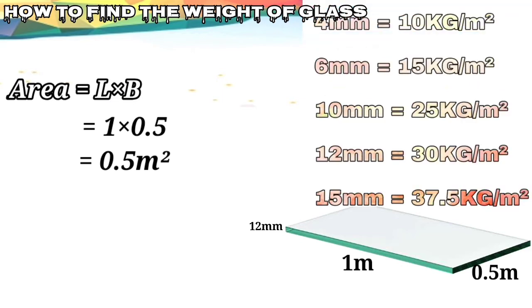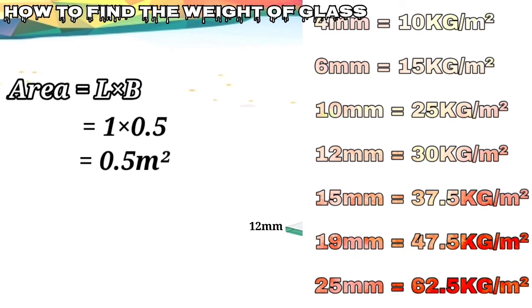Now if we see the chart, it clearly shows that for 4mm glass, that will be 10 kg per meter square. For 6mm there should be 15 kg per meter square. For 10mm there should be 25 kg per meter square. For 12mm there should be 30 kg per meter square.